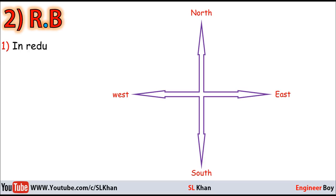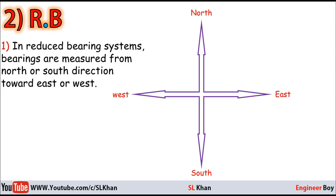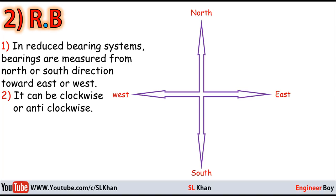In the Reduced Bearing system, bearings are measured from the north or south direction toward east or west. Compare this to the Whole Circle Bearing where the reference direction was only north and always clockwise. Here, the reference can be north or south, and the measurement can be toward east or west — meaning it can be clockwise or anticlockwise.